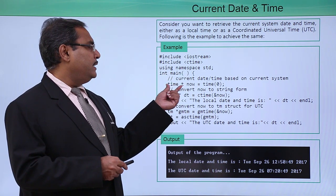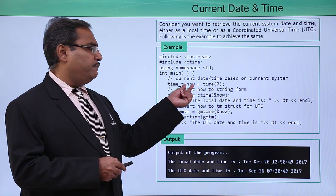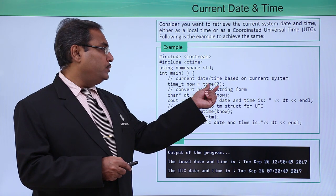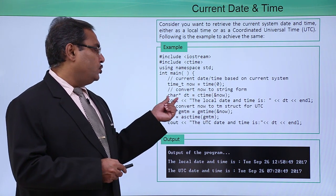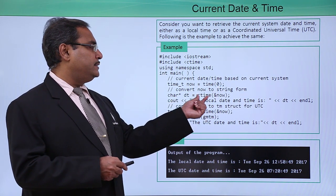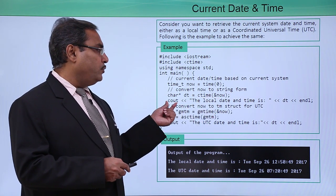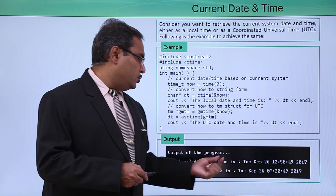Here we are having this one that is time_t type of variable that is my now and which is containing time(0) which is getting initialized with time(0). Now character pointer dt that is ctime ampersand now and then we are going to print this dt here.